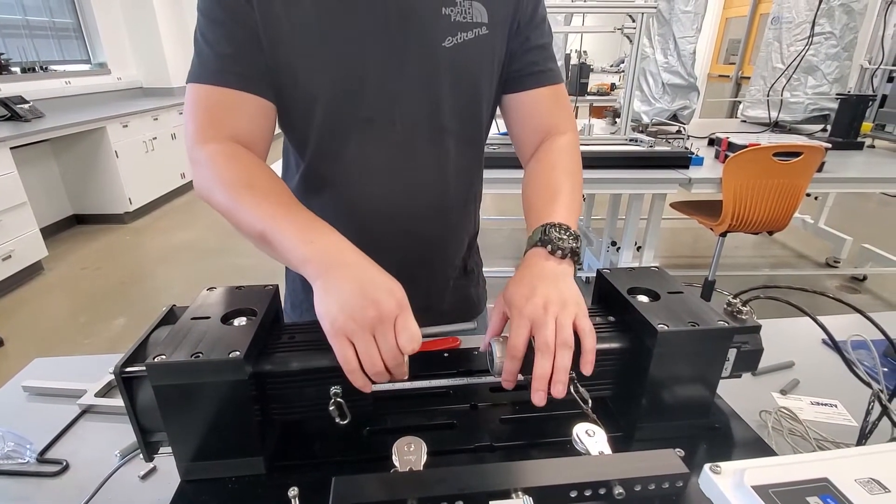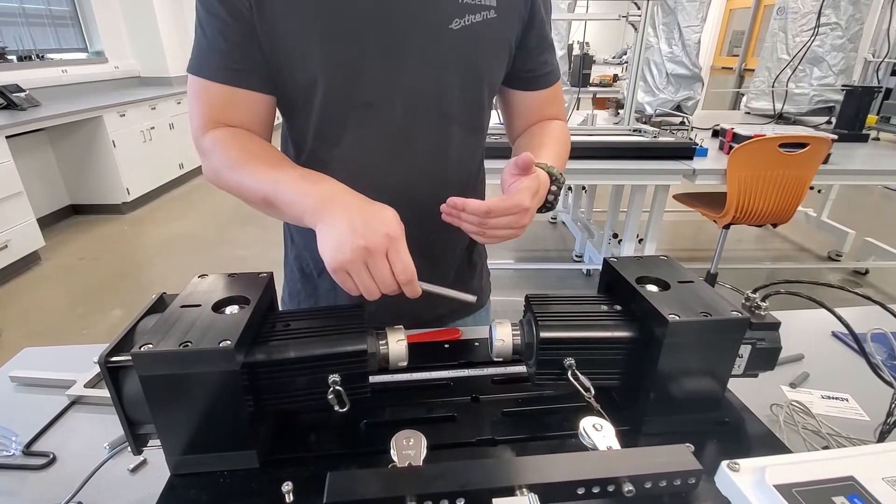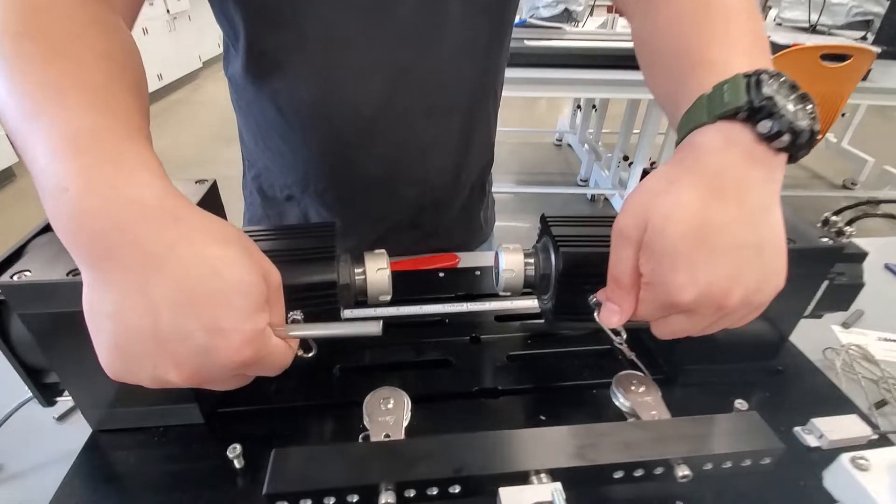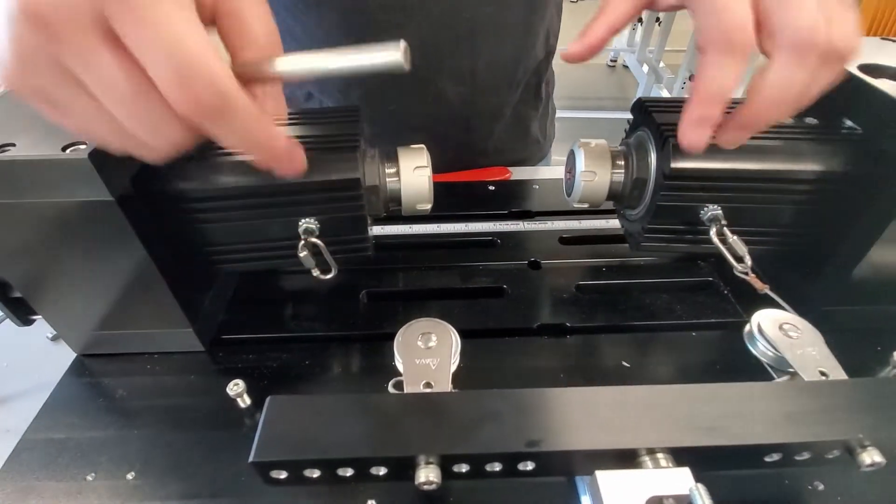So it has two fixtures, and we're going to load the sample from the fixture. Then we have two pulling wires, that is where we add the bending load, so I'll show you later.